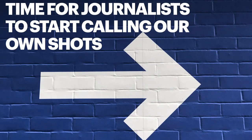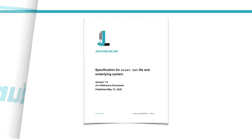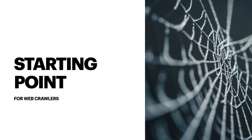So in short, the idea here is that it's time for journalists to start calling our own shots. And that's why we've created Journalist.net, which does essentially two things. The first is it is the caretaker for the specification system — the reference document of how to use the trust.txt file — and we'll be the ones managing that, but it'll be a completely open document published under Creative Commons. And then the other thing that Journalist.net will do is list out all of the members of Journalist, which will be a nonprofit member-owned organization. On that list will be a starting point for any web crawlers that want to know who's out there, and they can use this as the starting point to see who is using a trust.txt file.